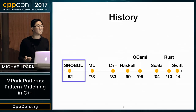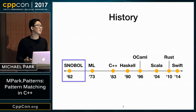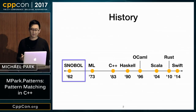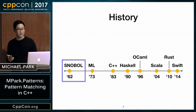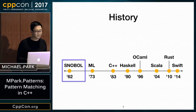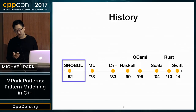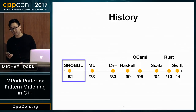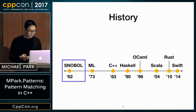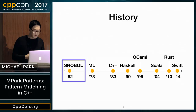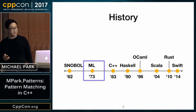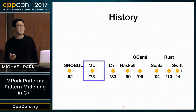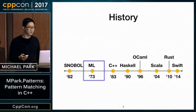In 1987, Perl came along and evolved that idea, introducing by far the most popular and well-known form of pattern matching today — regular expressions. ML then took that idea of pattern matching on strings and generalized it to more complex data types like tuples and variants.